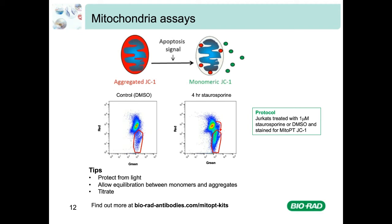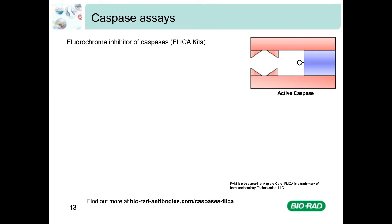Caspases are proteases that cleave protein substrates at specific amino acid residues. Caspase activation occurs early in the extrinsic pathway and in the intrinsic pathway following mitochondrial outer membrane permeabilisation. All caspases are synthesised in inactive forms referred to as pro-caspases, requiring dimerisation, oligomerisation and cleavage for activation. There are two main forms: initiator caspases 2, 8, 9, 10 and 12, which cleave and activate downstream effector caspases 3, 6 and 7, which then modify proteins and drive apoptosis.